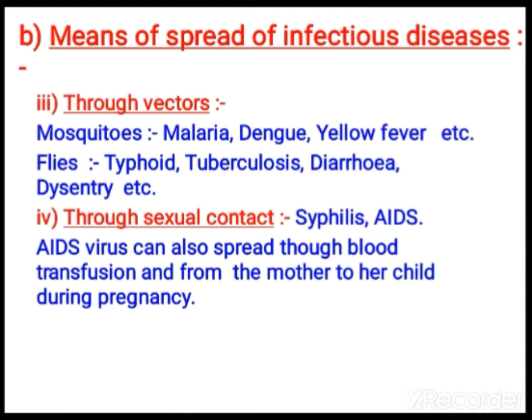To protect yourself from mosquitoes, use mosquito repellents, nets, or mosquito creams. For flies, close your food. Keep your surroundings clean and ensure there is no stagnant water near your home — automatically you can prevent diseases spread by means of vectors.